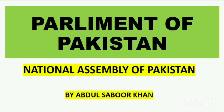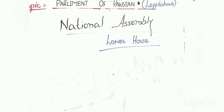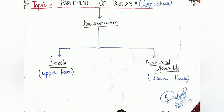When we discuss about any Parliament, we think about whether it is unicameral or bicameral in nature. When we talk about the Parliament of Pakistan, its nature is bicameral — this is called bicameralism. There are two houses of Parliament of Pakistan. The upper house is called the Senate, while the lower house is called the National Assembly.